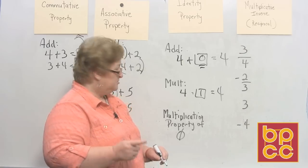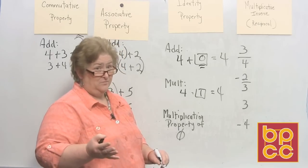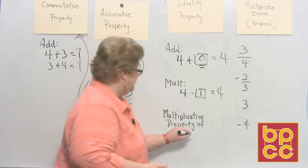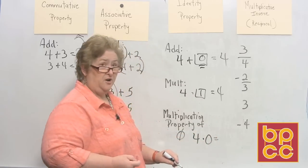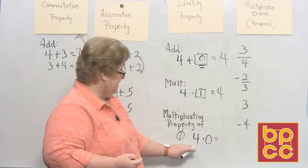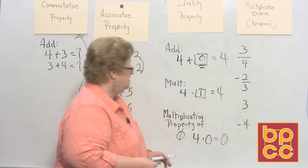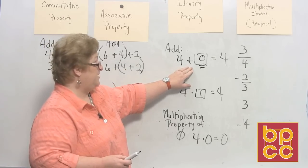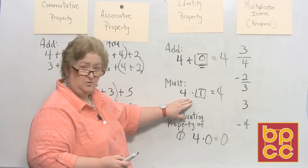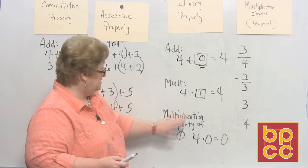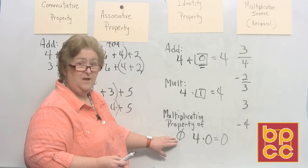But there's also a multiplication property of 0. I know it sounds kind of silly because everyone should know, or hopefully knows, that any number times 0, except when you get in a hurry, when you get in a hurry, sometimes you say 4. Any number times 0 is 0. So we have the identity property for addition, which is 0. We have the identity property for multiplication, which is 1. And then we have the multiplication property of 0, which says any number times 0 is 0.